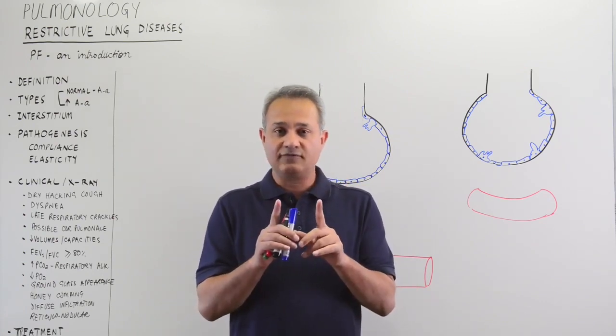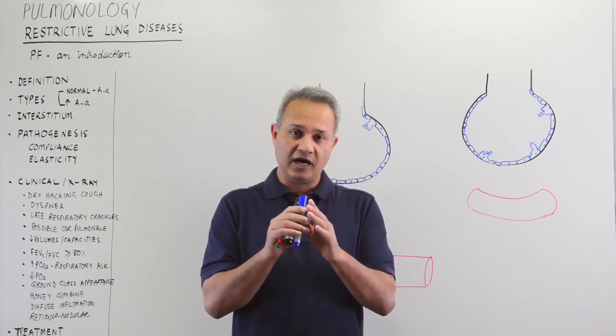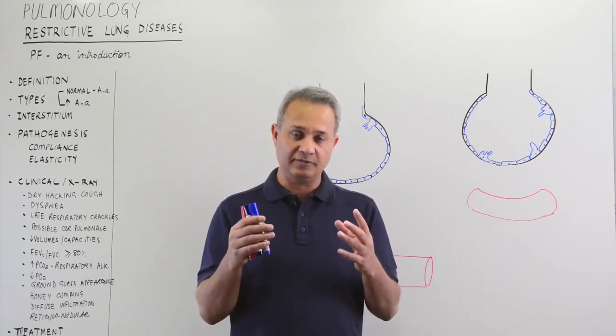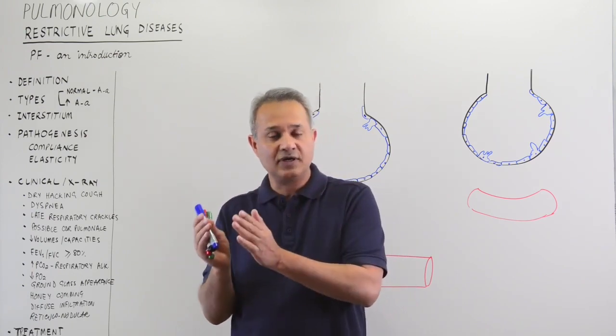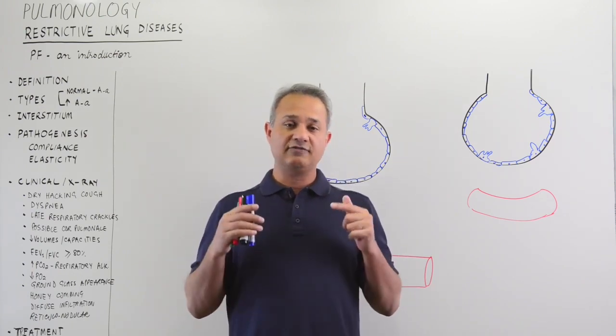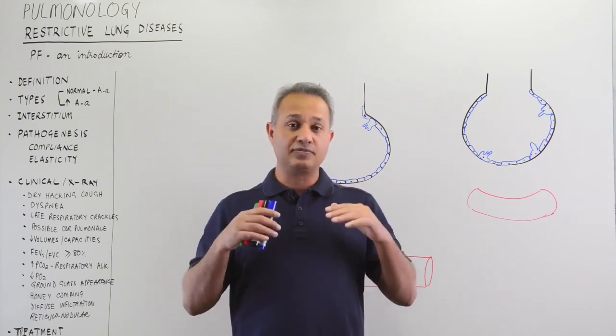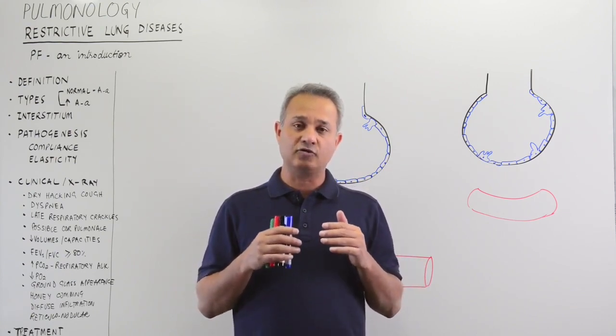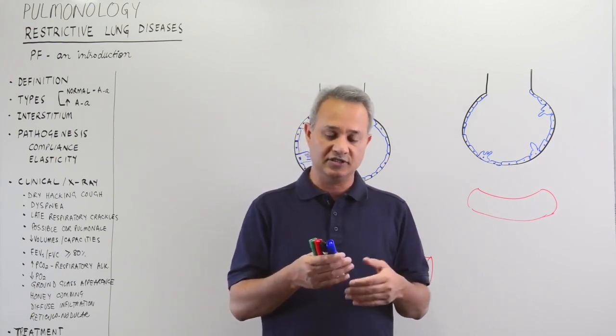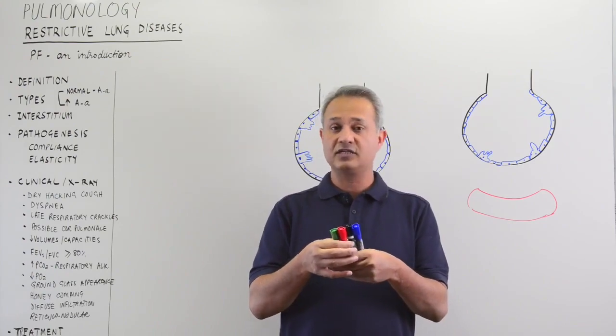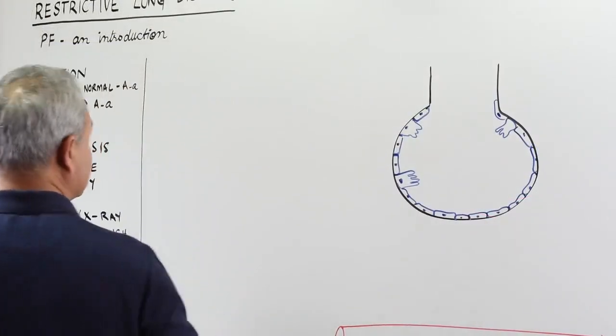The types of restrictive lung diseases are three primary types and then under each type, we have separate definitions. The diseases that we will primarily cover in this series are going to be the lung parenchymal diseases. So, let us first look at the types of the restrictive lung diseases.